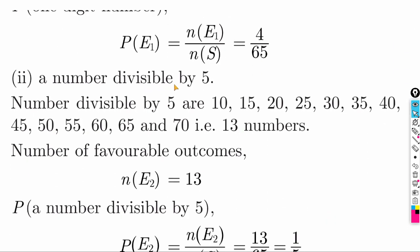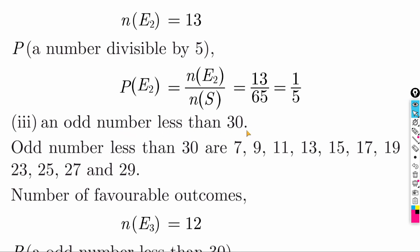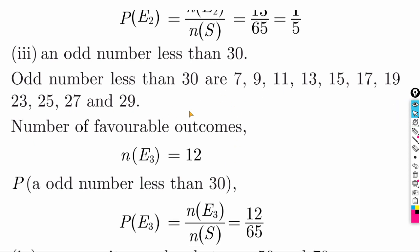Find probability of a number divisible by 5 from 6 to 70: 10, 15, 20, ... — total 13 numbers. Probability = 13 by 65. Find probability of an odd number less than 30: 7, 9, 11, 13, 15, 17, 19, ... — total 12 favorable cases. Probability = 12 by 65.